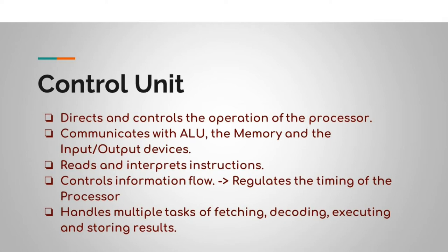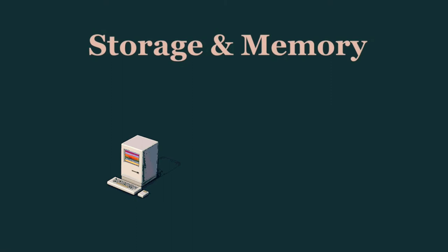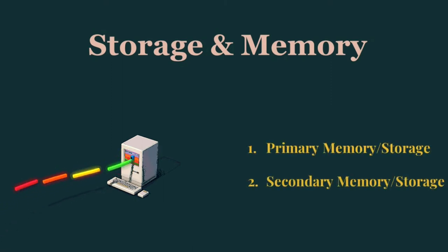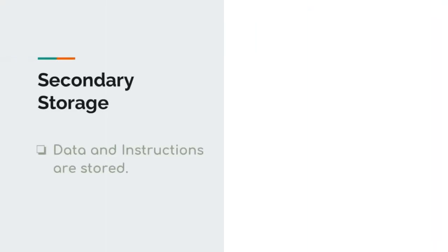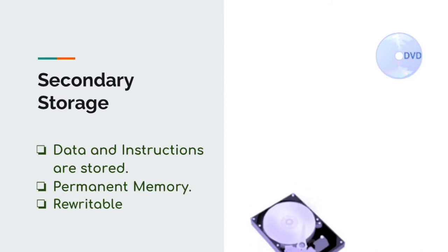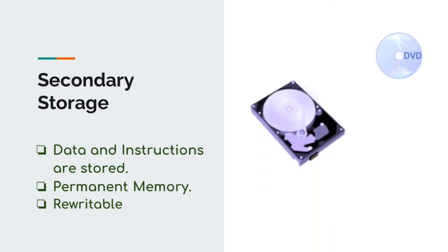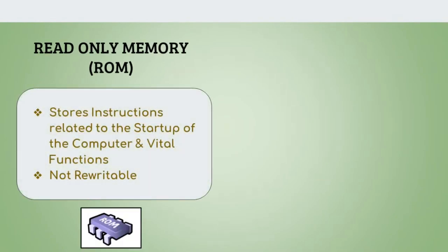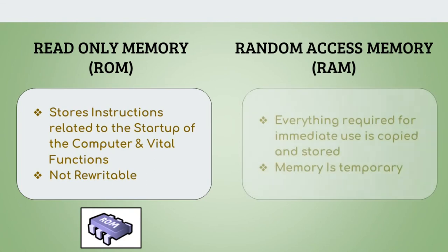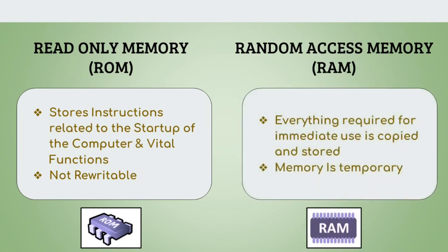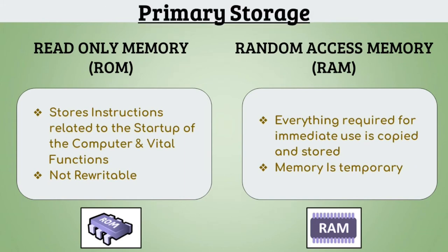Now we know where the computer keeps its brain. Now we will see where it keeps its knowledge. There are two kinds of memory in a computer: primary memory and secondary memory. The secondary storage is the unit where all the computer's data and instructions are stored — this is the permanent memory containing data and programs, and it is rewritable. There is another memory called ROM, read-only memory, where essential instructions related to the startup of the computer and other vital functions are stored. It's not rewritable. From the ROM and the storage, everything required for immediate use is copied and stored in the memory section. This memory is temporary and is called the RAM, random access memory. So RAM and ROM are the primary memory.